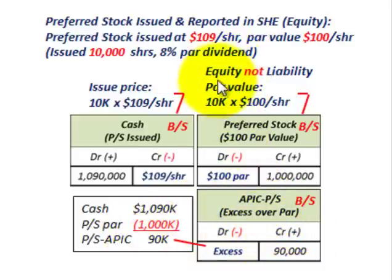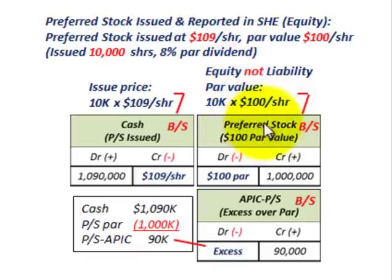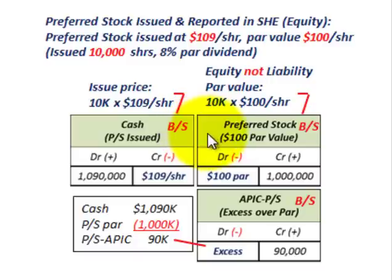That takes care of looking at our preferred stock — how you determine dividend payments, the simple convertibility feature of converting preferred stock into common stock, and how you issue and record preferred stock. Remember, you set up a separate equity account for preferred stock on your balance sheet, both for the preferred stock itself and the additional paid-in capital for preferred stock. That covers our three basic examples: dividends, convertibility, and issuing preferred stock.